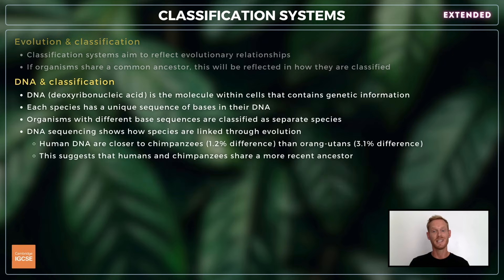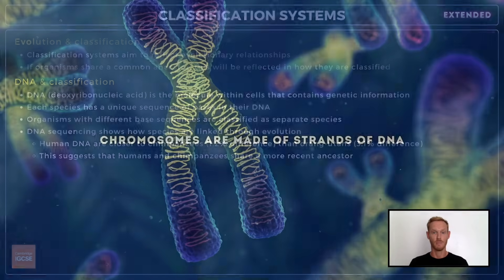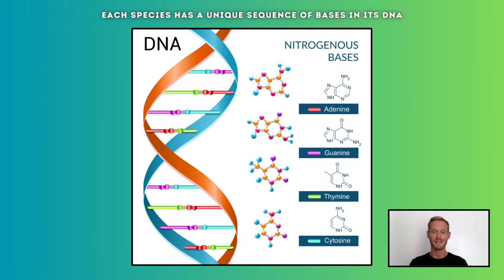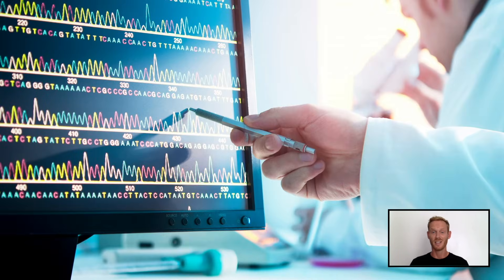Finally, you need to know how DNA sequencing is used to classify organisms. The use of DNA has revolutionised the process of classification. Most organisms contain chromosomes made up of strands of DNA which contain genetic information. Each species has a unique sequence of bases in its DNA, making it identifiable and distinguishable from other species. This is particularly useful when different organisms are very similar in appearance and internal structure. In such cases, scientists study their genetics and if differences are found, they will be classified as separate species.